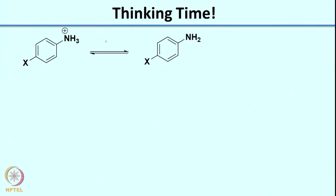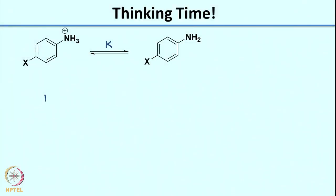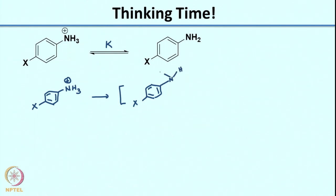Before leaving last time I had given you an example — the deprotonation of an aromatic amine. Let us look at the k value for this reaction. I had asked you to first write the mechanism, which is straightforward: it is just a deprotonation as shown. Now, what you need to think about is when you go from the reactant, which is protonated, to the transition state. In the transition state, the N–H bond is partially broken.